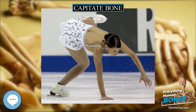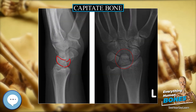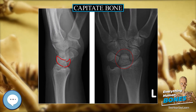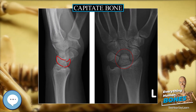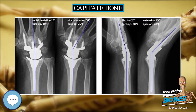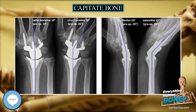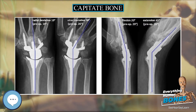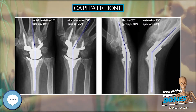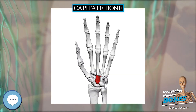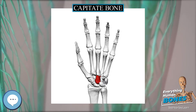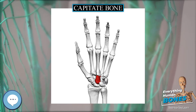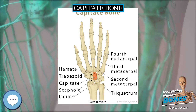Various mechanisms for fractures of the capitate have been postulated. Adler et al. described three mechanisms: the first is direct trauma to the dorsal surface of the bone, the second is fall on the palm with the wrist in forced extension, and the third is fall on the forcefully flexed hand, the second being the most frequent and the third rarest.